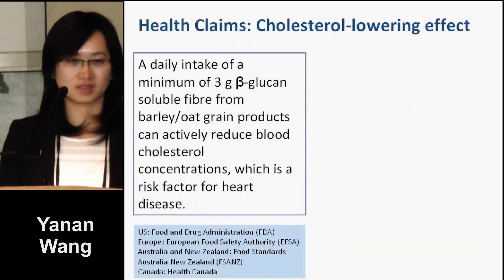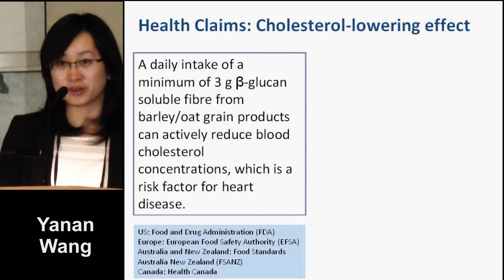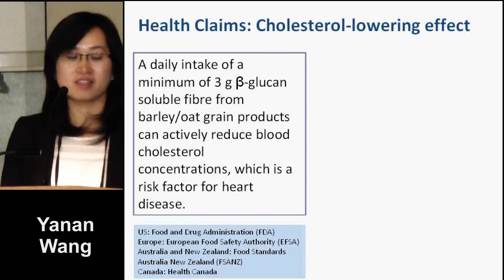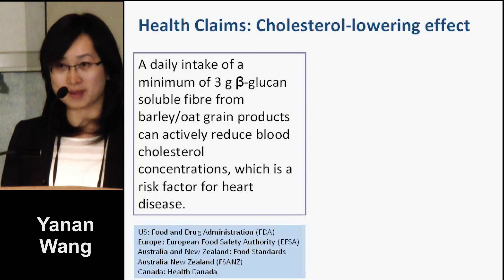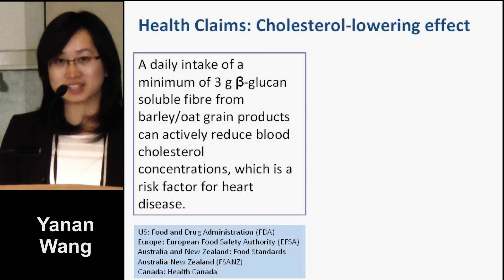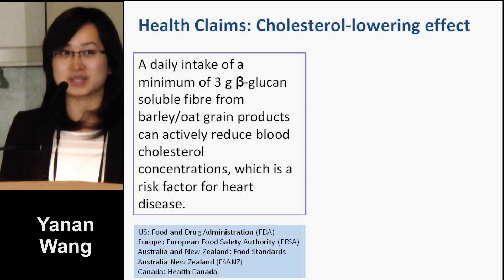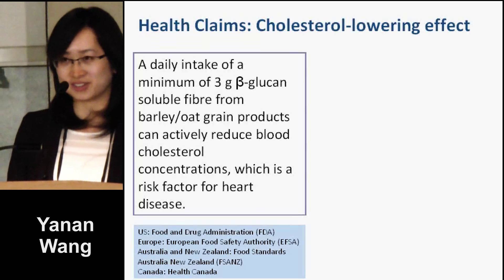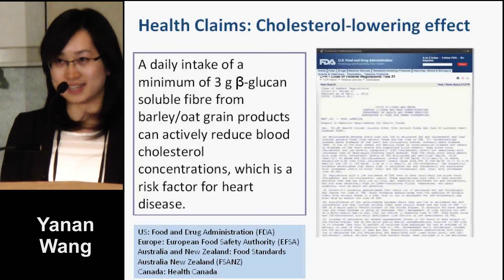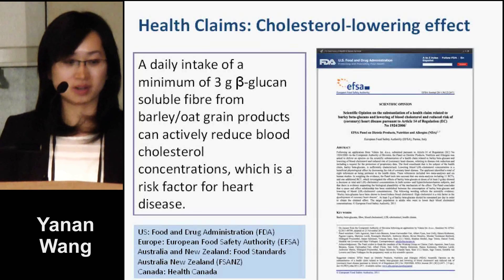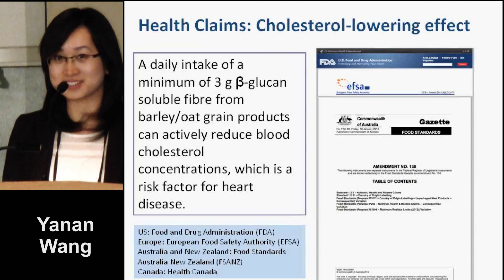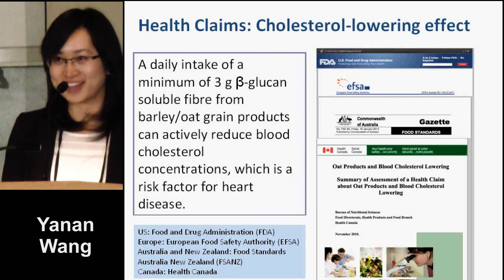Here in the results, I'm going to show you the baseline characteristics of our sample. Our participants were a little bit overweight with a BMI of 27.8. Men were a little bit heavier than women. Women had higher HDL cholesterol and higher CRP levels, while men had a higher total cholesterol to HDL ratio and higher triglyceride levels.